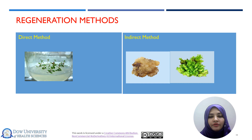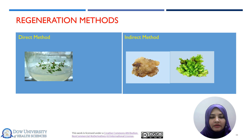An important phenomenon used in in vitro propagation is the regeneration method. Number 1 is the direct method, and number 2 is the indirect method. In the direct method, any kind of leaf, shoot tip, or meristematic cells can be taken for sterilization, and direct organ formation of the plants can be done. For direct organogenesis and for protoplast cultures, this direct method can be used by adding different plant growth regulators.